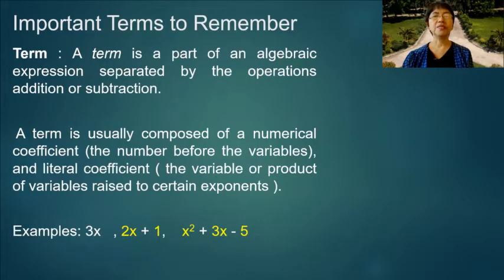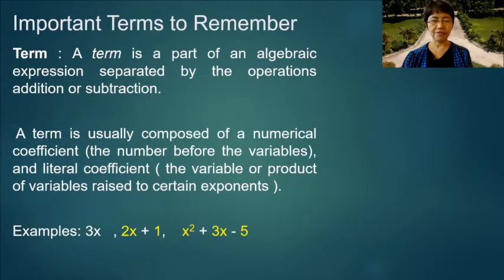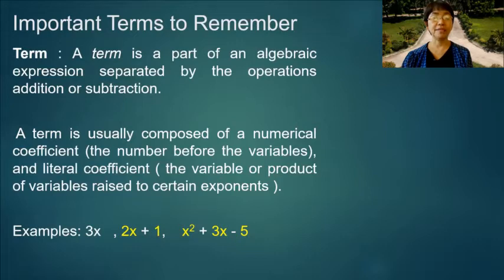Term: a term is a part of an algebraic expression separated by the operations addition or subtraction. A term is usually composed of a numerical coefficient and a literal coefficient. The literal coefficient is the variable or product of variables raised to certain exponents. Examples: 3x, 2x plus 1, x squared plus 3x minus 5.